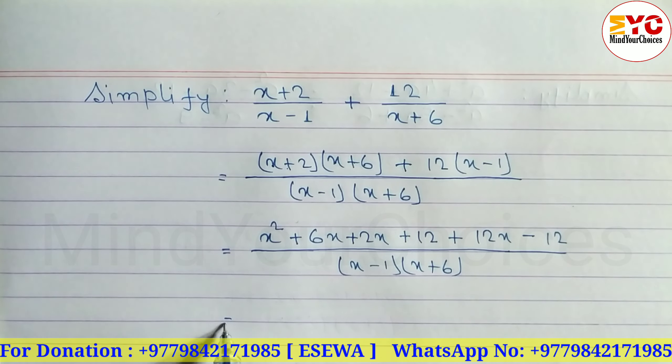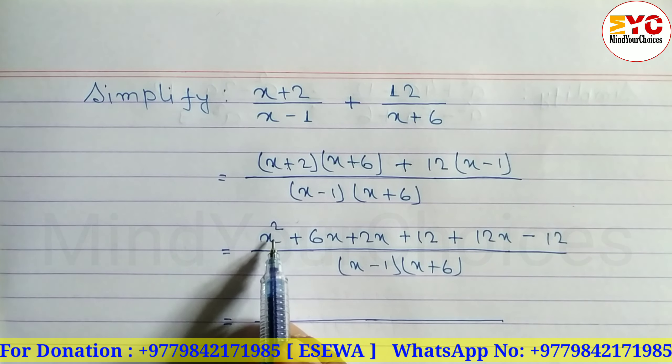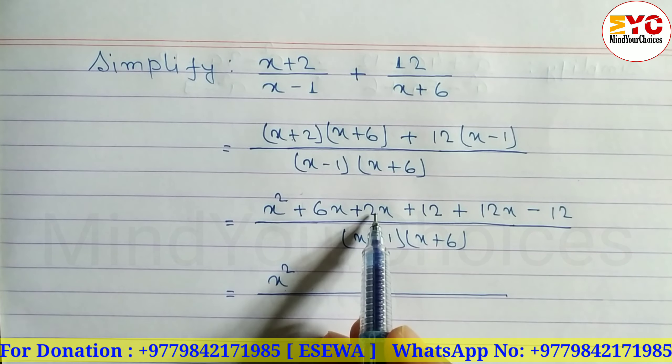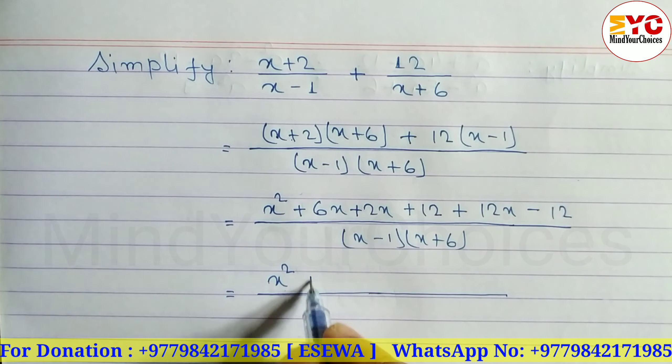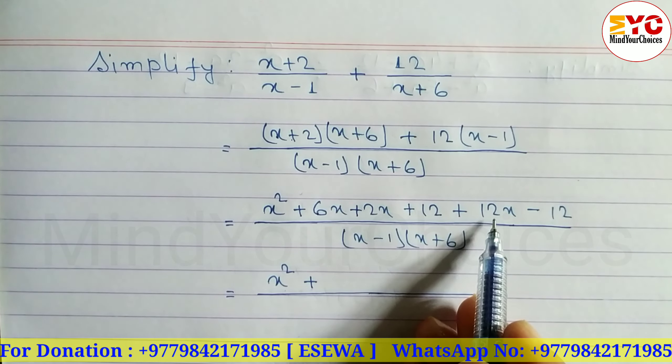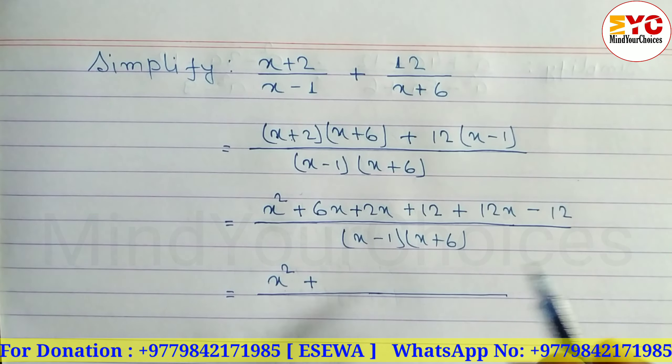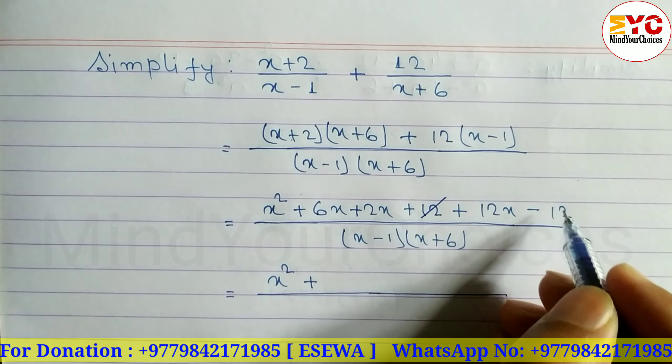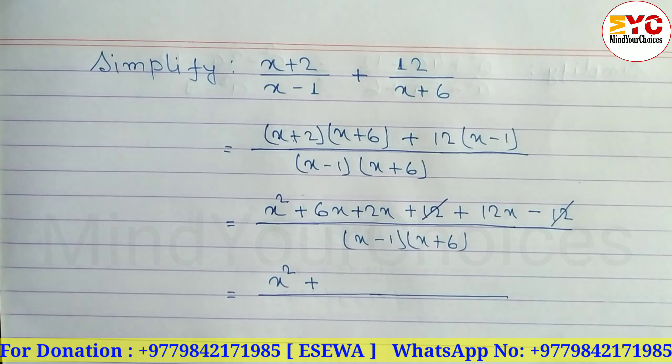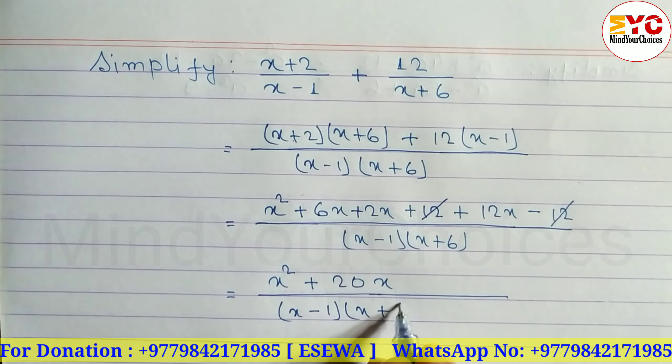After this we have to arrange the like terms. Here is x square and there's no other x square. So we can write x square. Now the x terms: here is 6x, here is 2x. 6 plus 2 equals 8 in one place. Now adding directly: 6 plus 2 is 8, 8 plus 12 is 20. Directly 20x. And here 12 and 12 cancel - one is positive and one is negative. 6 plus 2 is 8, 8 plus 12 equals 20. So we can write here 20x divided by x minus 1 times x plus 6.